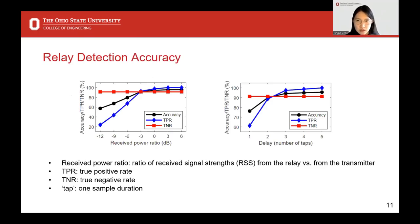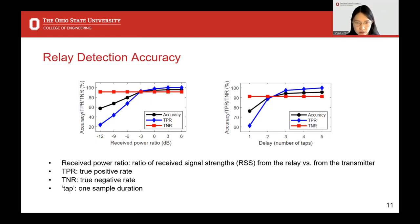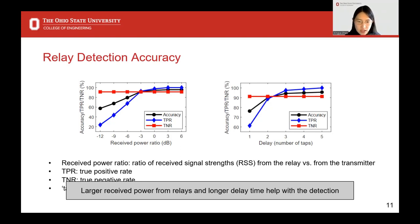We evaluate detection accuracy under different relay settings. The signal power received from the relay and the delay time of relayed signals are the two parameters that most affect system performance. We use the received power ratio — the ratio of RSS from the relay versus RSS from the transmitter — to measure signal power. The left figure shows detection performance changes with different relay power ratios at a fixed three-sample delay time. The right figure shows detection performance with different delay times when the received power ratio is fixed at 0 dB. Detection accuracy increases as the relayed signal gets stronger and the delay time gets longer.